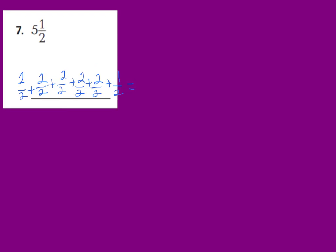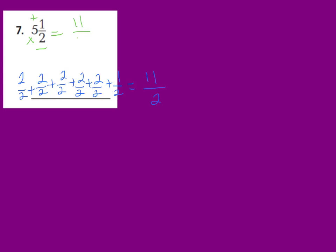If I had 5 wholes, and each one is cut into halves because my denominator is 2. So 2 halves equals 1 whole, and I'll have that 5 times because I have 5 wholes: 2 halves plus 2 halves plus 2 halves plus 2 halves plus 2 halves — that's 10 halves. And 10 halves plus another half equals 11 halves. I can check my work: 5 times 2 is 10, and 10 plus 1 is 11 — keeping my denominator the same, a 2.